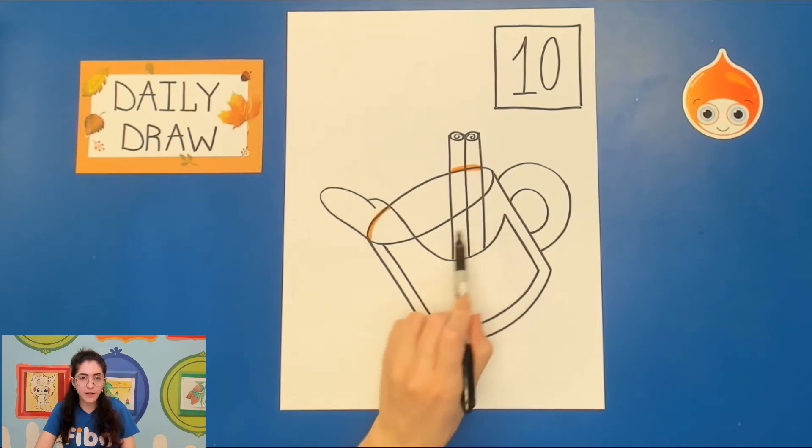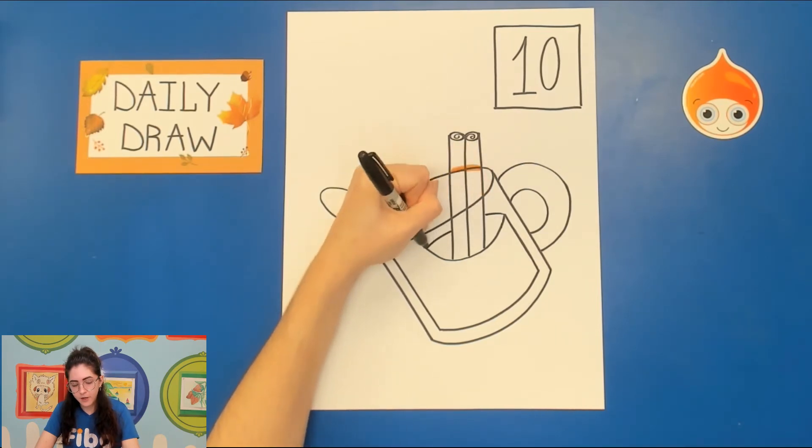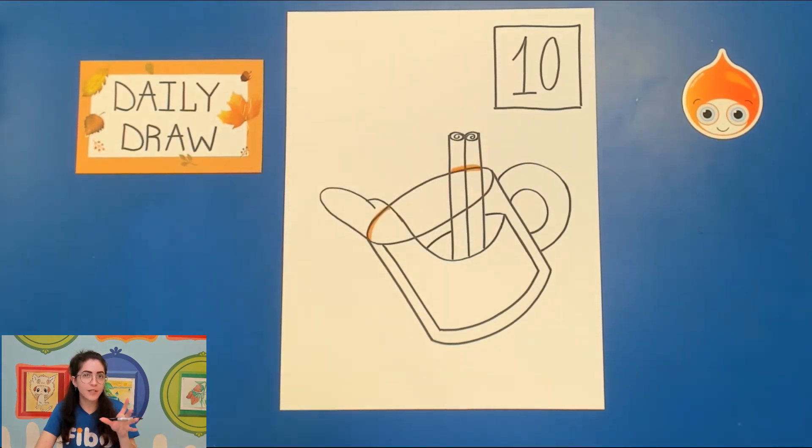And then last but not least we have our cup here that's three-dimensional and we're going to be able to see parts of the liquid that are inside the cup on the other side. So take your pencil start right here draw a curve and a curve and that will show the liquid that's on the other side of the cup.